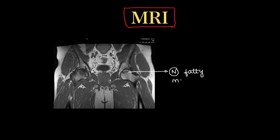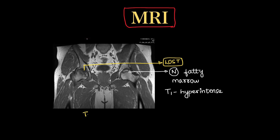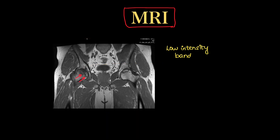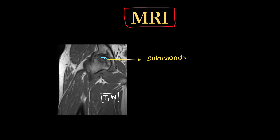Coming to the most important modality — MRI. On T1-weighted images, normal fatty marrow appears hyperintense on both T1 and T2. In cases of edema where water molecules replace fat molecules, there will be decreased signal intensity areas in the involved hip. Low intensity bands signify the ischemic bone, and the subchondral fracture appears as a characteristically low intensity line on T1-weighted images.